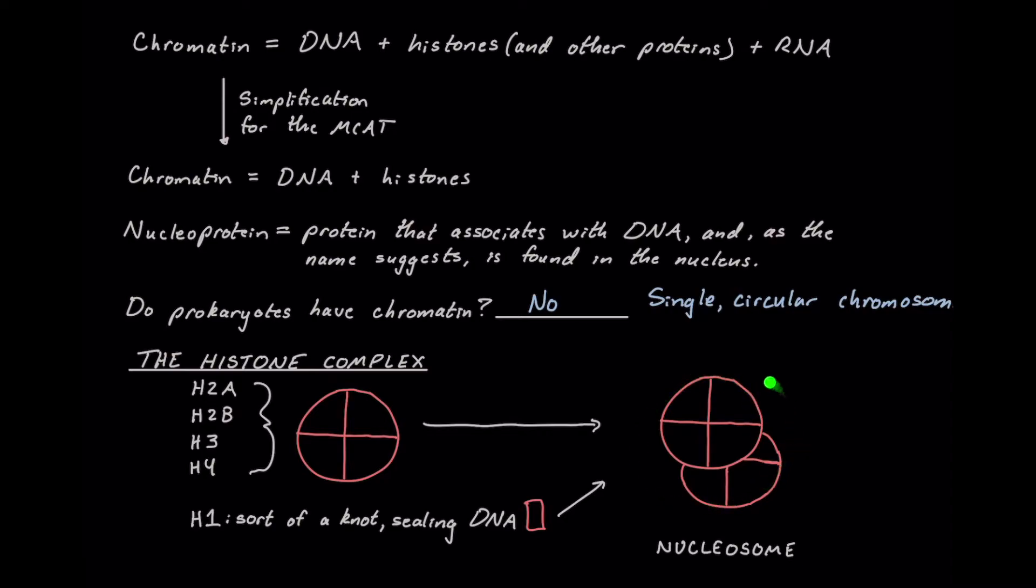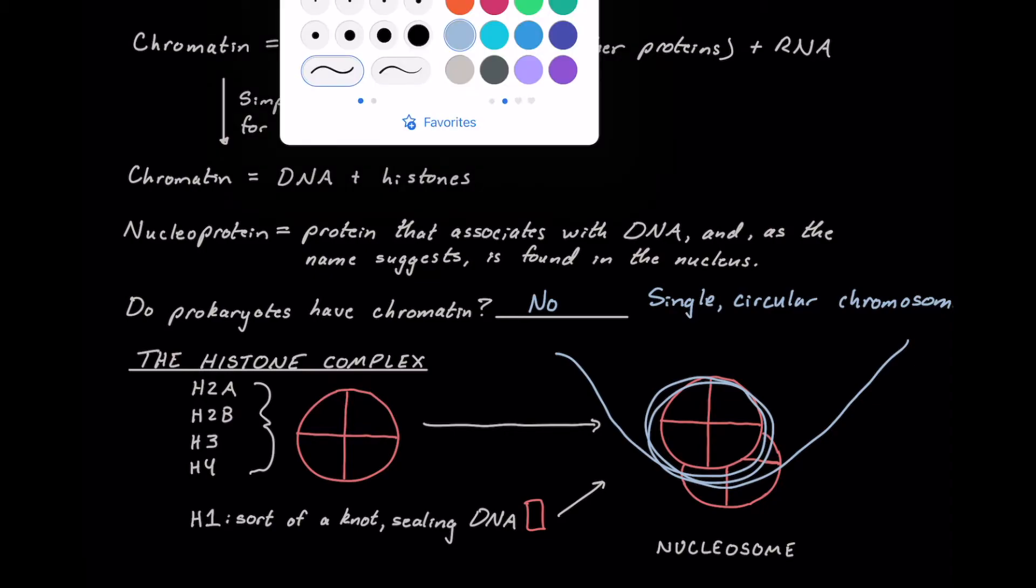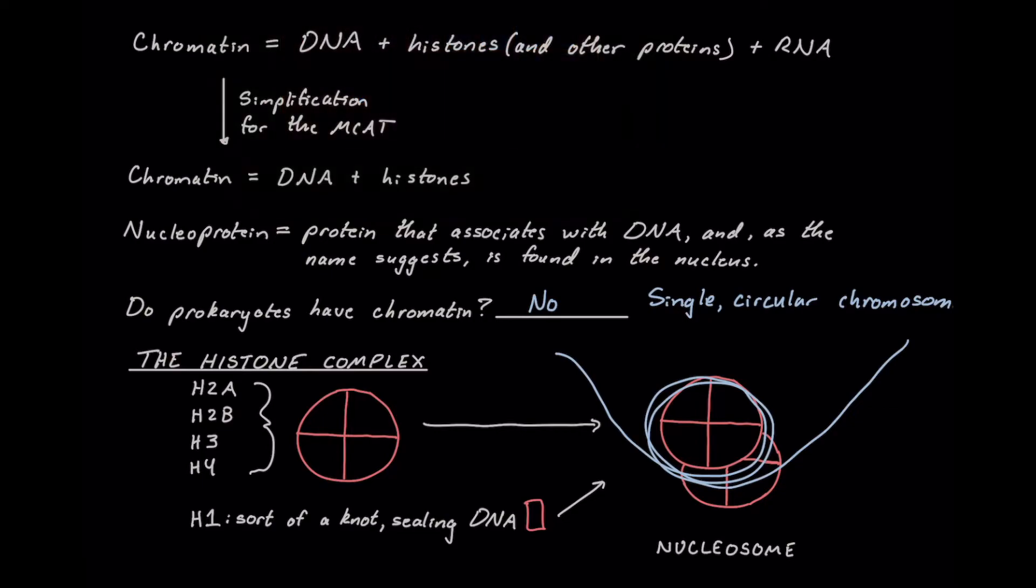...and form a histone octamer where we can wrap our DNA, so in blue here we'll draw the DNA, wrap our DNA around kind of like a spool of yarn here, and then we will seal off this DNA quite nicely with this little H1 protein here. And altogether, this is going to form a nucleosome. Therefore, a nucleosome is going to be our histone octamer plus H1 protein with the DNA wrapped around it nicely like this.